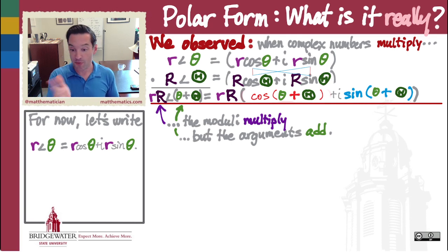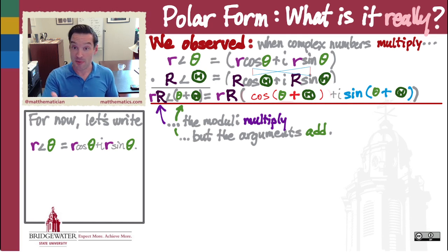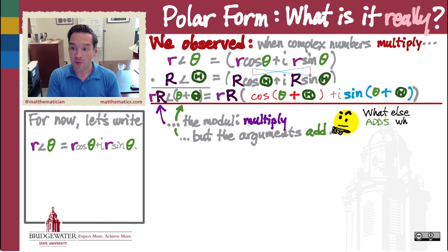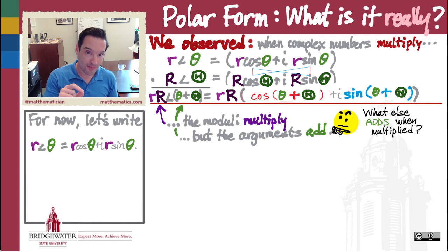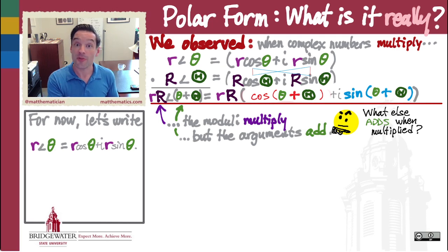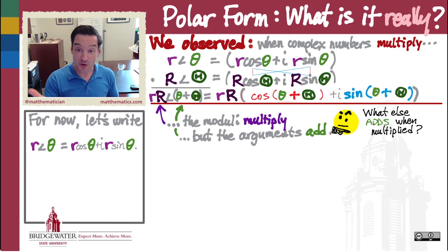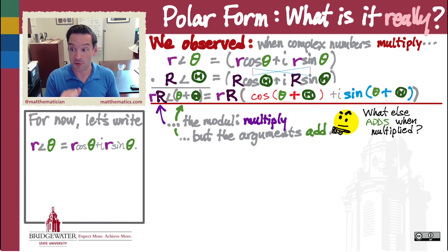So if I multiply a complex number that makes a 45-degree angle with the positive real axis by another complex number that makes a 30-degree angle, their product makes a 75-degree angle with the positive real axis. This leads us to ask: what else do we know in our mathematical training that adds when numbers are multiplied? This is the key observation that will get us to the root of what the polar form of a complex number really is.